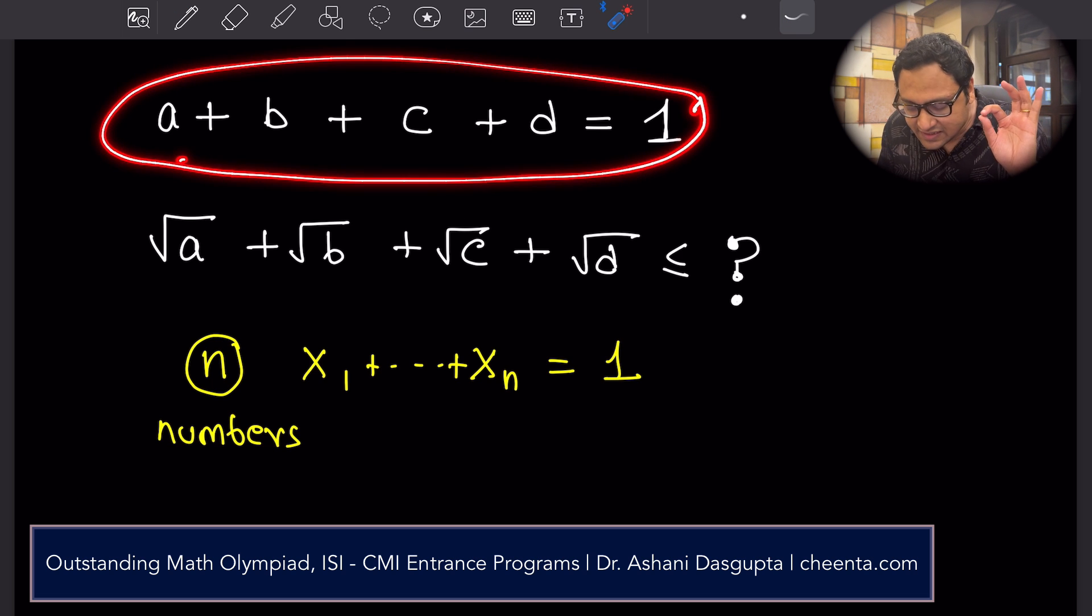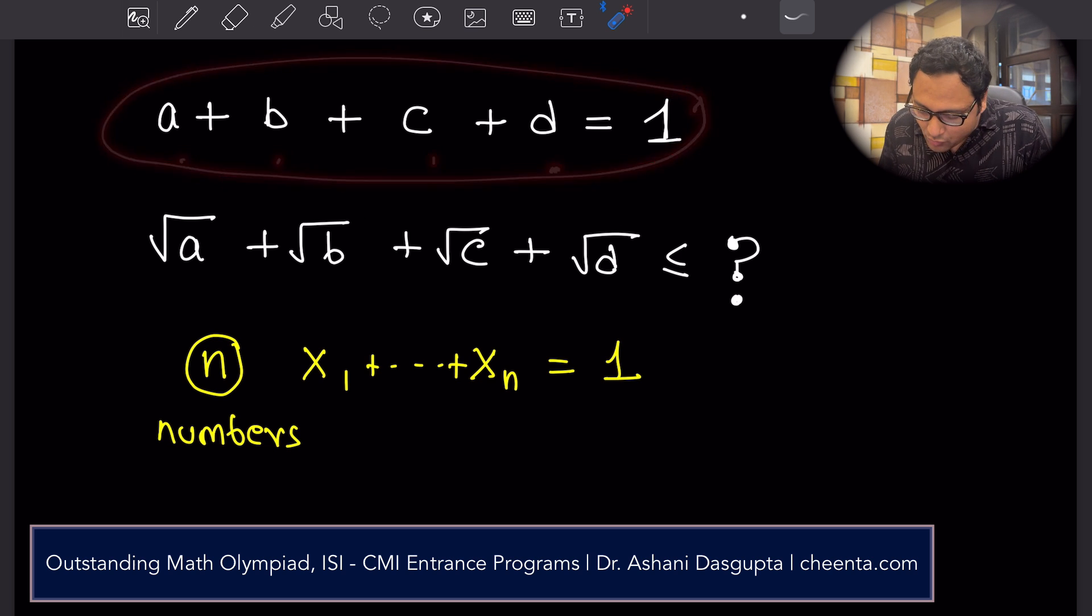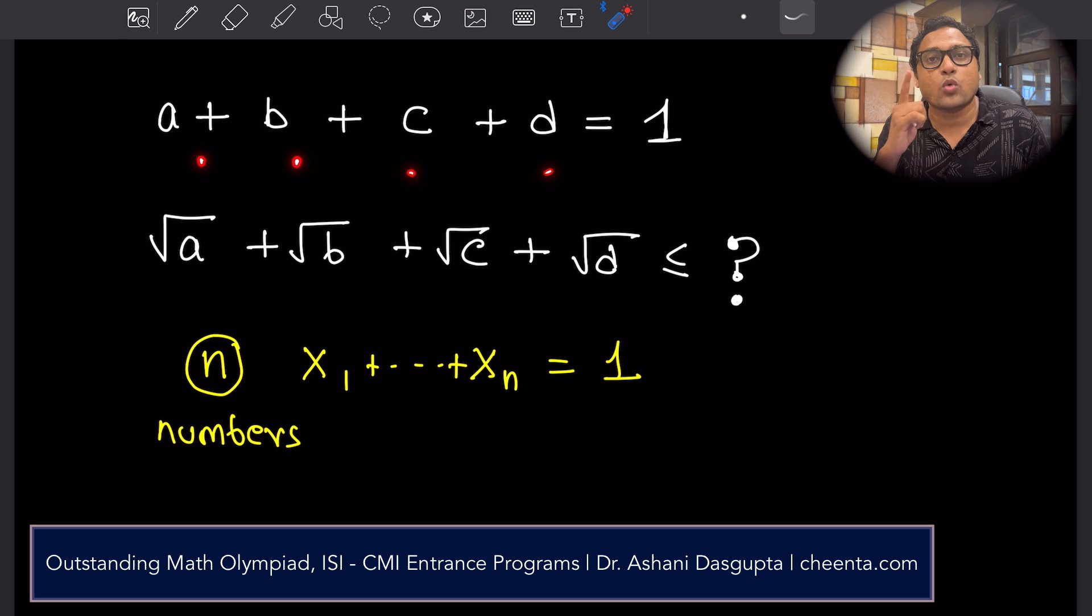A, B, C, D. The general case, n numbers. Sum of these 4 numbers is 1. In the general case, sum of these n numbers is 1. That is given.